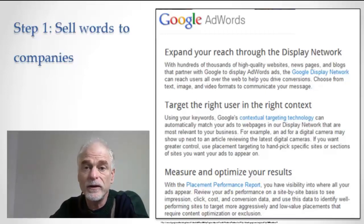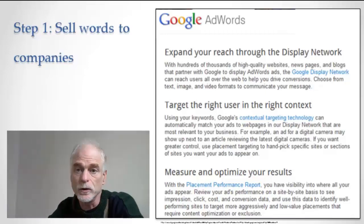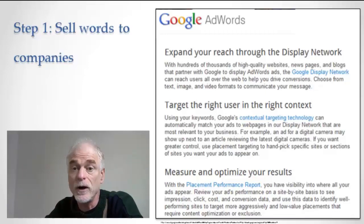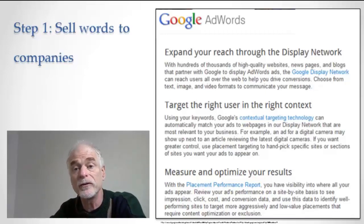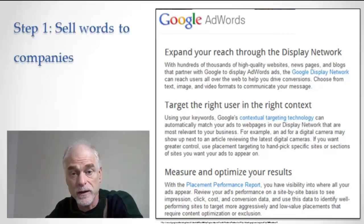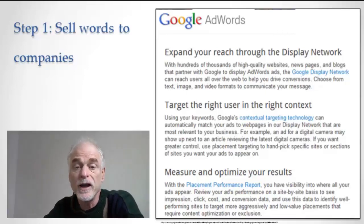As was hinted at in the video we saw earlier from Google, it depends. It depends on who else wants those words. So it's in Google's interest to start a bidding war and say who wants to be at the top of the results when someone searches for flowers in Tucson, and whoever's going to pay the most will get to be the top. If you bid the second most, you get to be down from the first result.